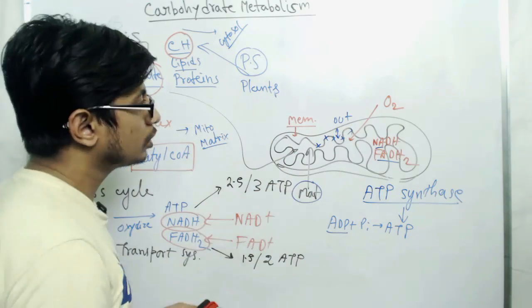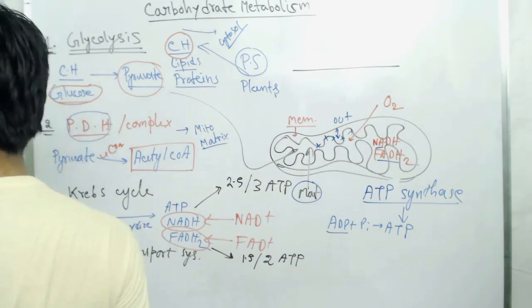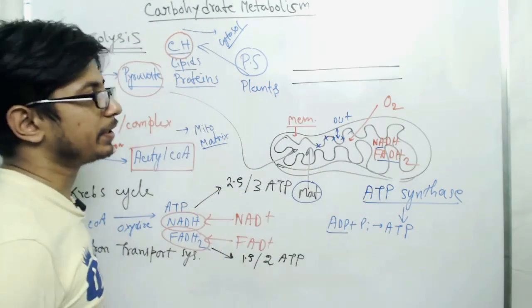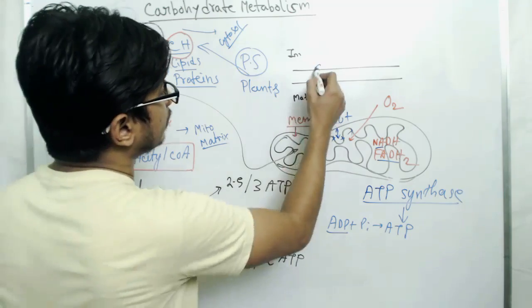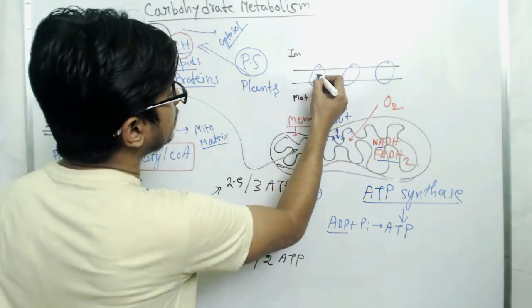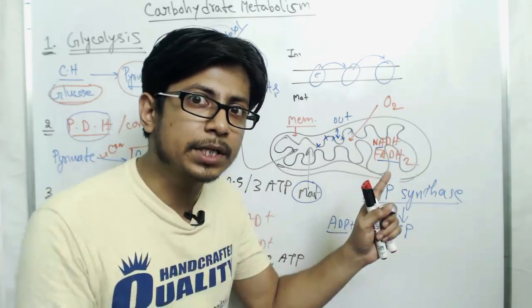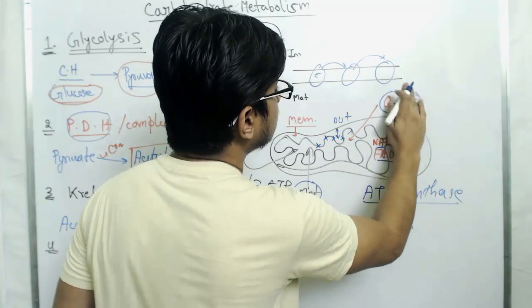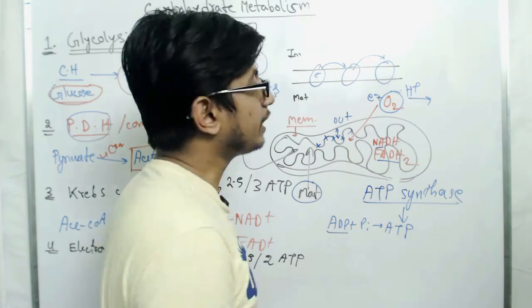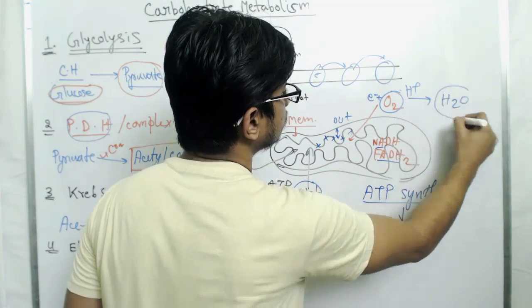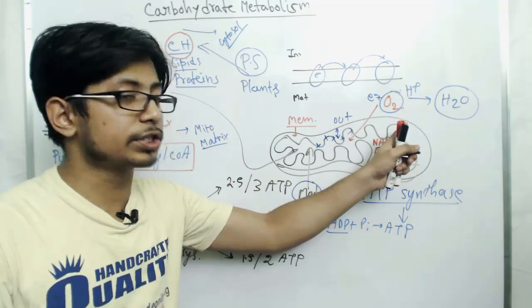If we draw it out — the inner membrane space above and the matrix below — electrons are transferred from one complex to the other. Finally there must be a terminal electron acceptor, and oxygen acts as this terminal electron acceptor. Along with hydrogen, oxygen is converted into water, and this is exactly the first location where oxygen is required.